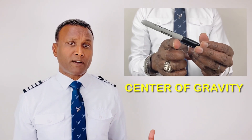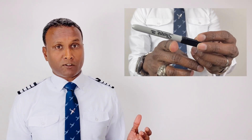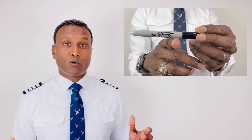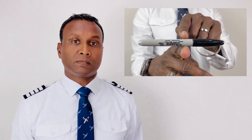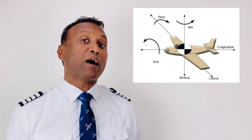An aircraft is said to pitch, roll, and yaw about its center of gravity. To explore this, let's first understand what center of gravity is. Take for example this pen — let's try and find the center of gravity of this pen. This point where I can balance the pen without it sloping in one direction or the other is where the center of gravity is located. Therefore, we can describe the center of gravity as the point at which a body is able to balance in equilibrium. CG is the abbreviation used for center of gravity.